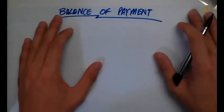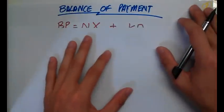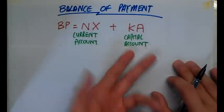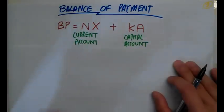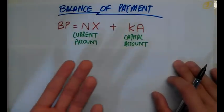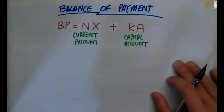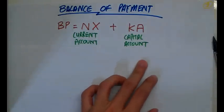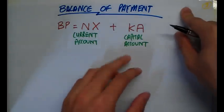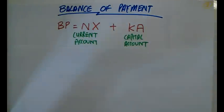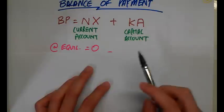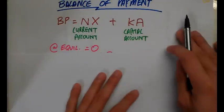Now I have to teach you about the concept of the balance of payment. The balance of payment is an account that every country has, and it is made up of the current account — which is net exports — and the capital account. The current account is exports minus imports, and the capital account captures money that has either flowed into or out of the country. At equilibrium, the balance of payment equals zero.